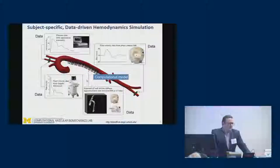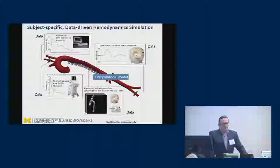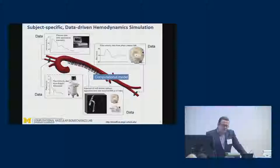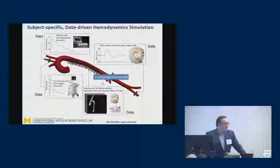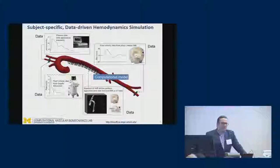We rely very heavily on data that is either clinically or experimentally obtained. This data is fundamentally anatomical — what you see in the middle here is someone's aorta — and also physical data on quantities of interest for hemodynamic analysis: either direct measurements of velocity and pressure, or more indirect measurements such as perfusion and pulse wave velocity.